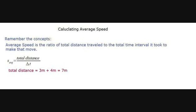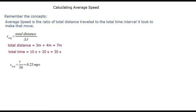Total time equals 10 seconds plus 20 seconds, which equals 30 seconds. Therefore average speed equals 7 divided by 30, which equals 0.23 meters per second, approximately. Since average speed is a scalar quantity, it does not have any direction.